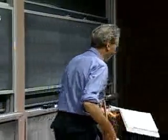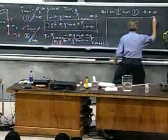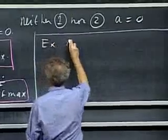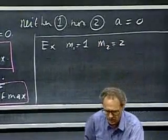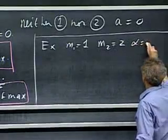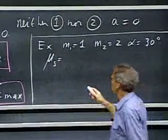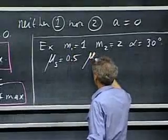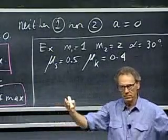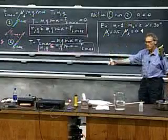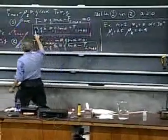Let us take a very simple example so that you see this at work. In my example, I have M1 equals one kilogram, M2 equals two kilograms. I take alpha equal 30 degrees. I take a static friction coefficient of 0.5, and a kinetic friction coefficient of 0.4. The question is: is it going to accelerate uphill, accelerate downhill, or have no acceleration at all? We have to evaluate these three terms.